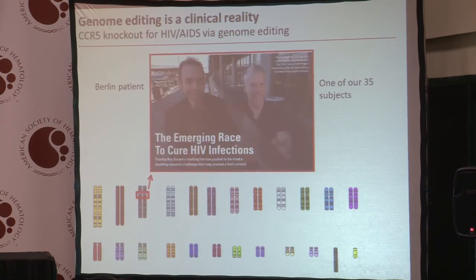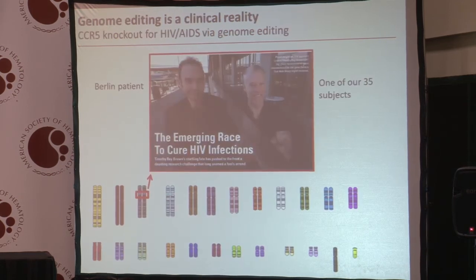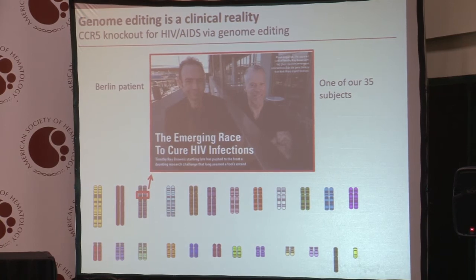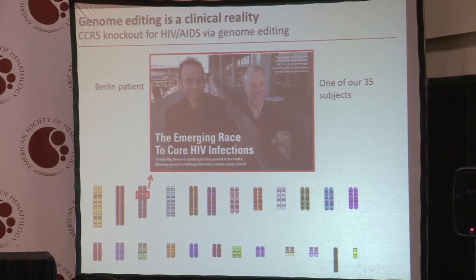Now, I realize that to some of you, the notion of changing in a targeted fashion DNA in a person's cells might seem slightly futuristic. Let me assure you, it is not. We are in the process of doing several clinical trials in which we're doing genome editing of the CCR5 gene, which is located on chromosome three, and the clinical trial is focused on HIV-AIDS. Just to illustrate the reality of it all, that's one of our 35 subjects on the right there.